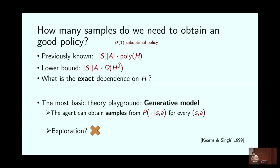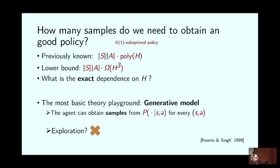To tackle this question, let's consider an even more basic setting: the generative model. In the generative model you have a very strong oracle — you can sample from every state-action pair. Basically we shut down exploration. In reinforcement learning you want to balance exploration and exploitation, but here we shut exploration down to isolate the sample complexity in this simple setting. Even for this very simple setting, the dependence on H was not clear.